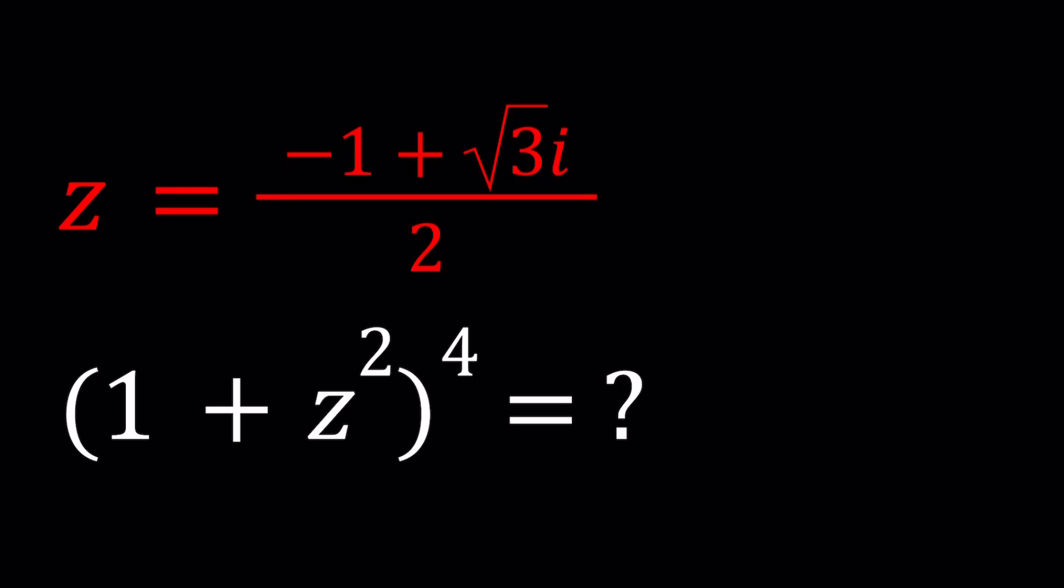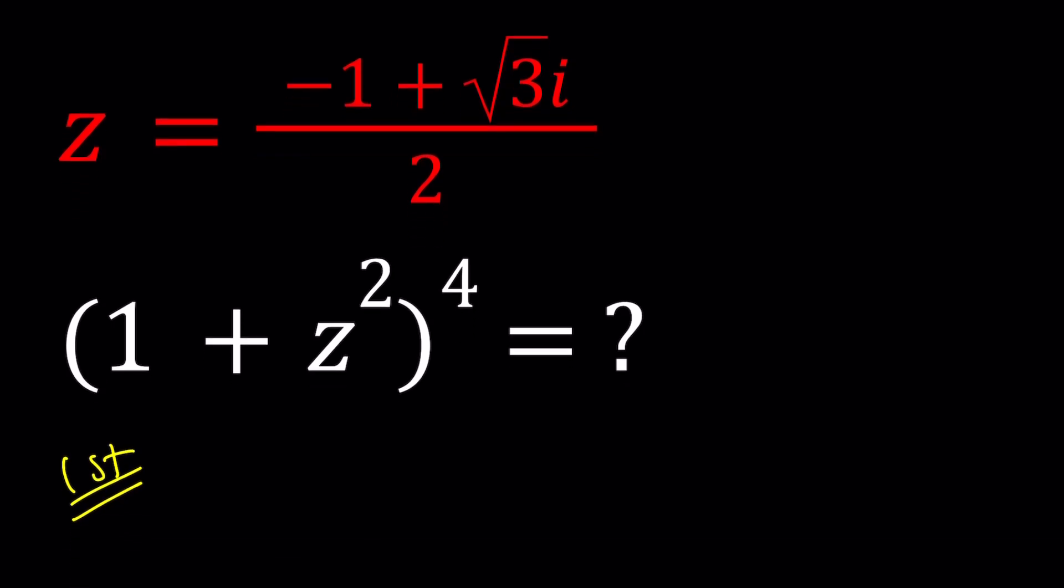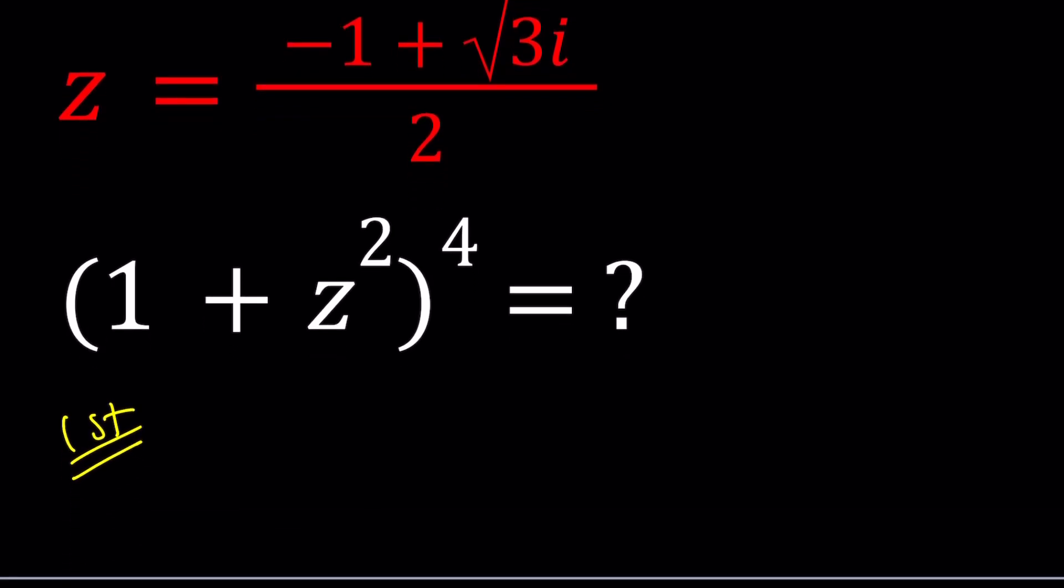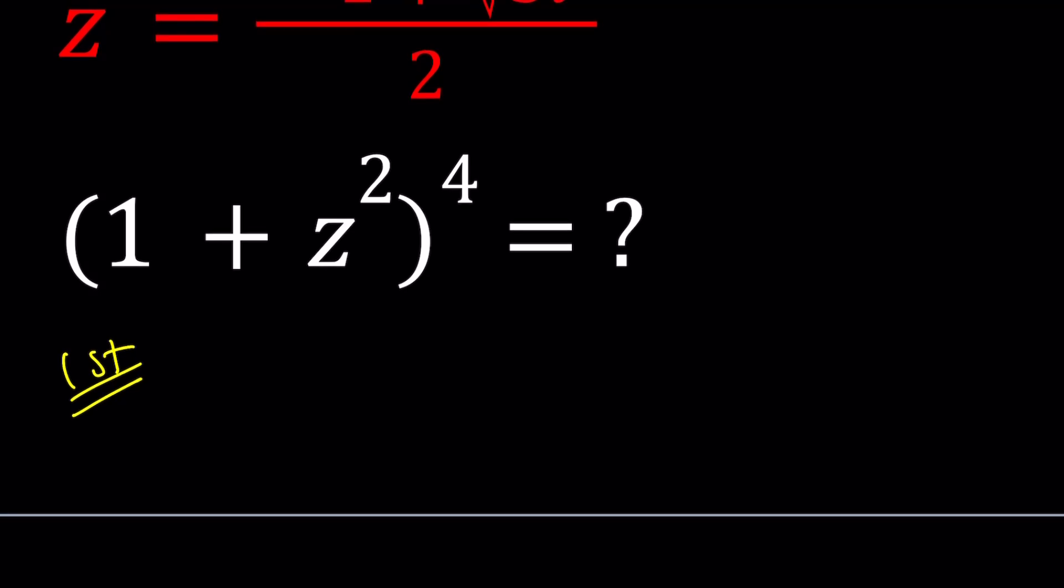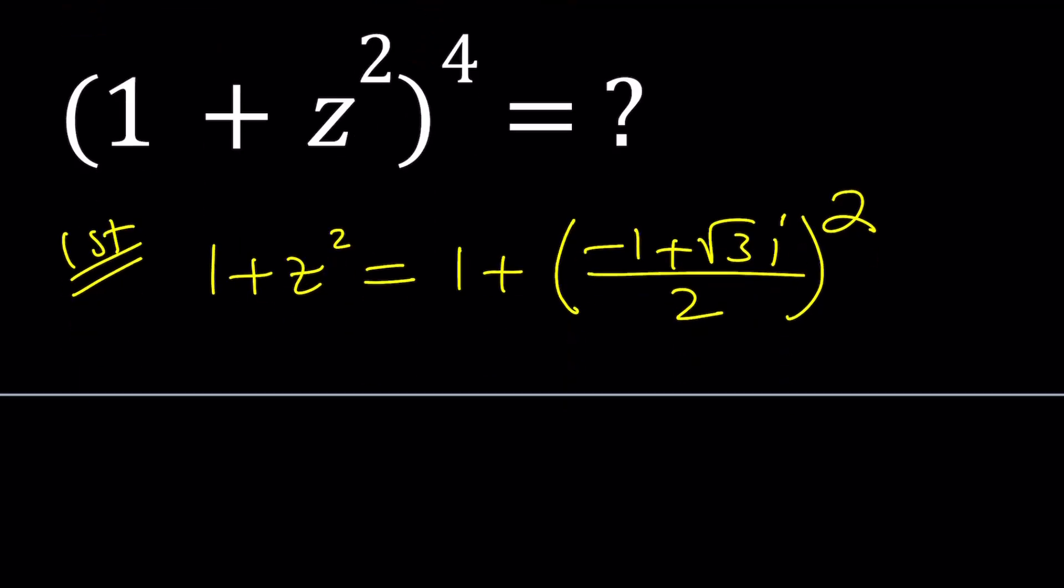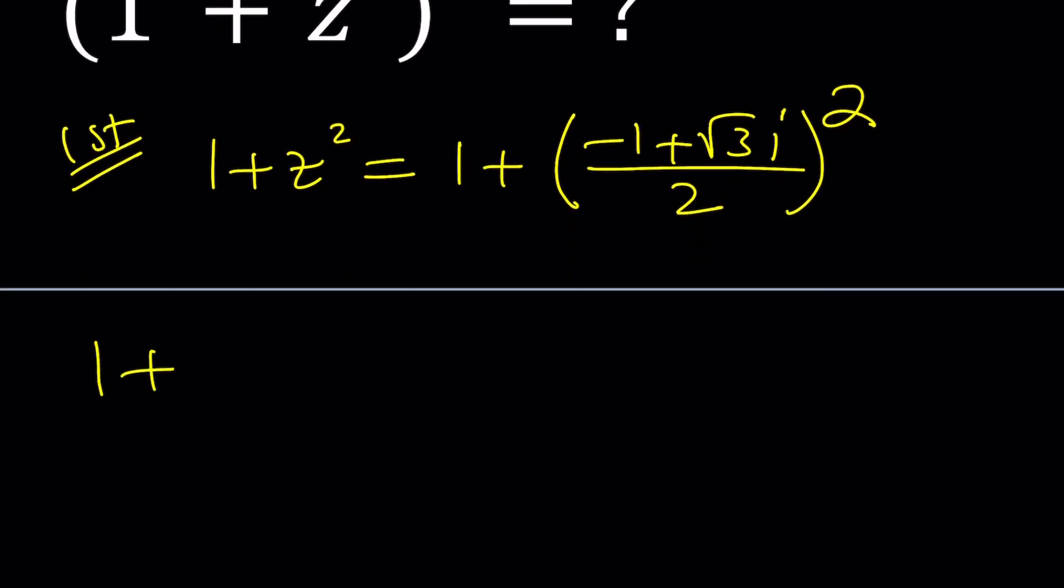So I'll be presenting more than one method. Let's see how many we can come up with and let's start with the first method. The first method would definitely be straightforward substitution because substitution is awesome, so why not just evaluate 1 plus z squared and then raise it to the fourth power. Now I'm going to square this number negative 1 plus root 3i divided by 2, add 1 to it and see what happens. Just experiment.